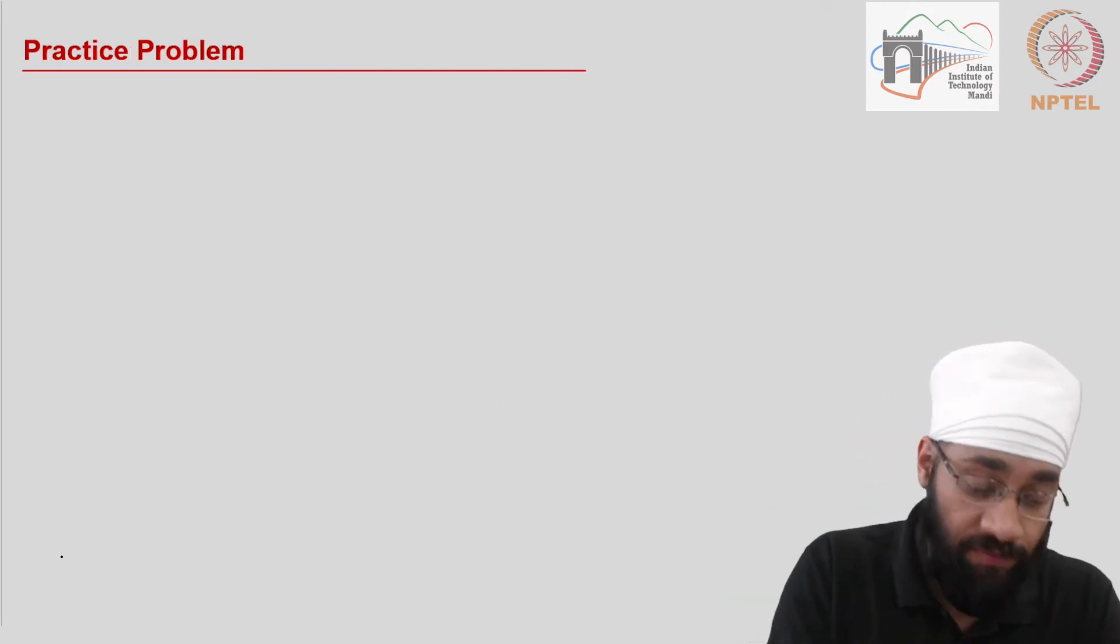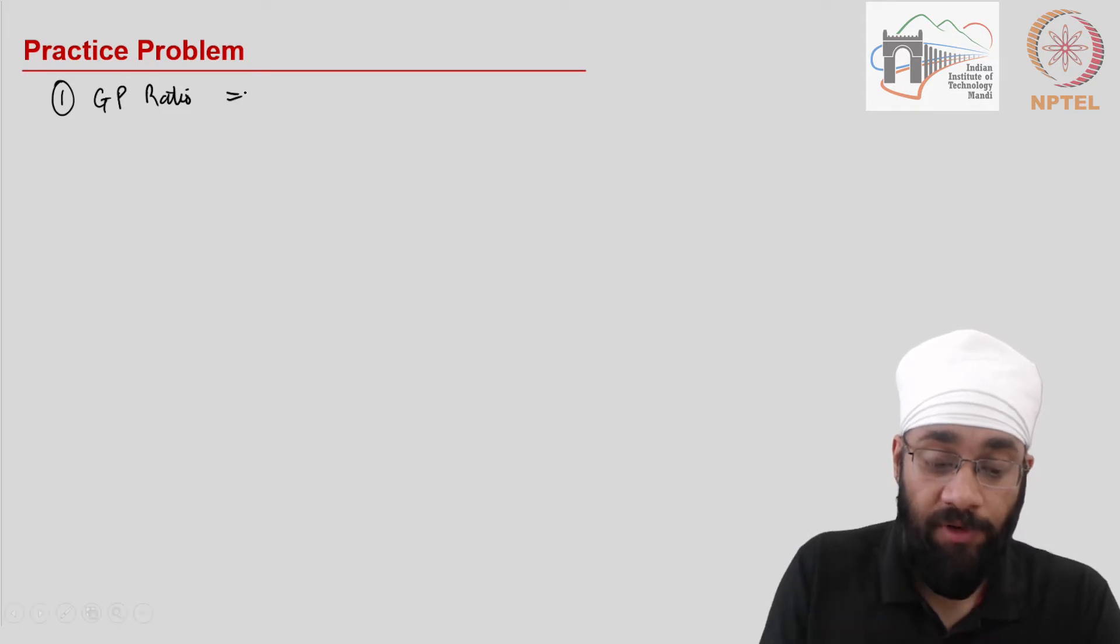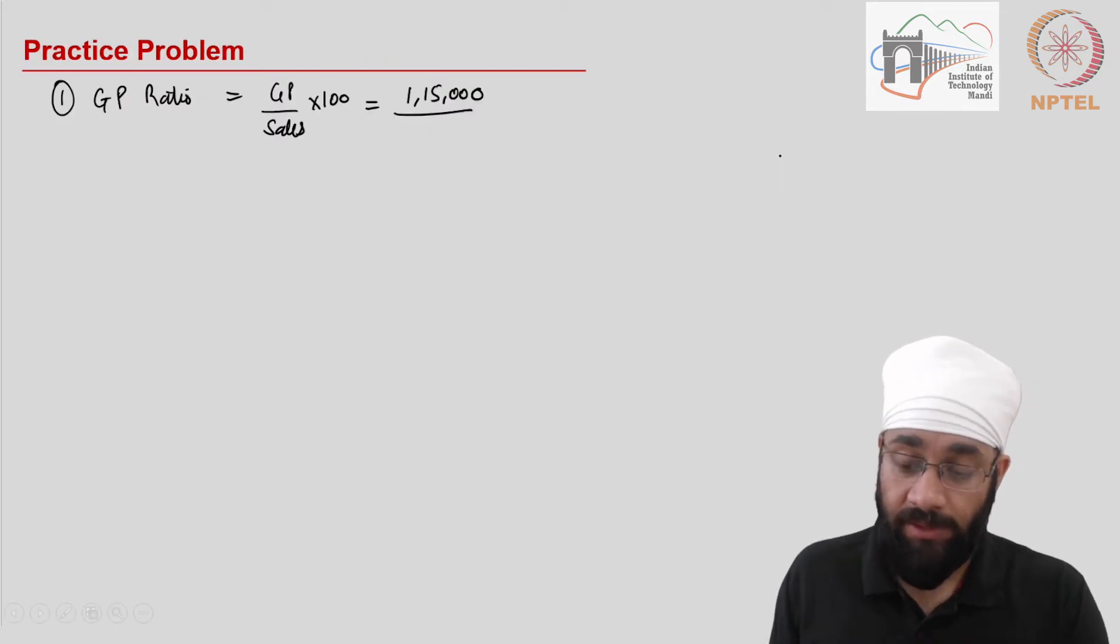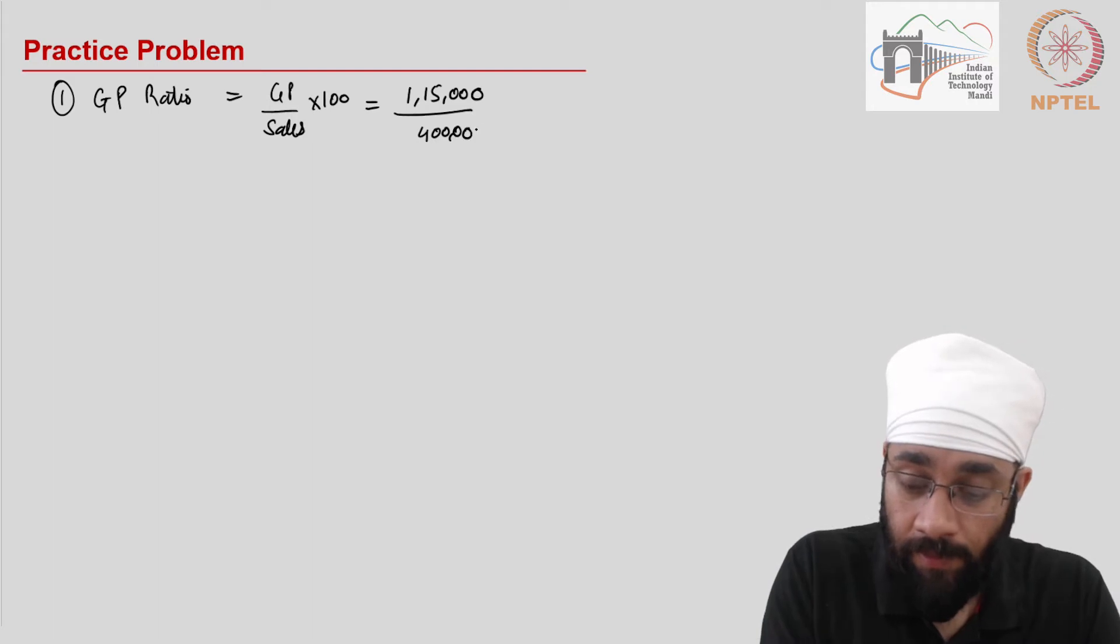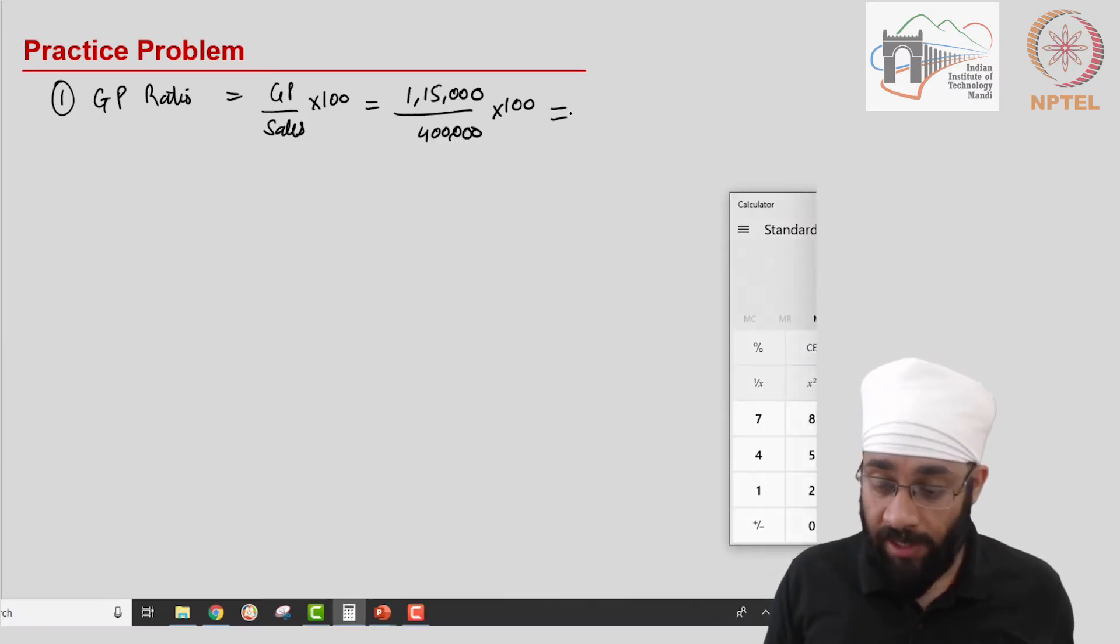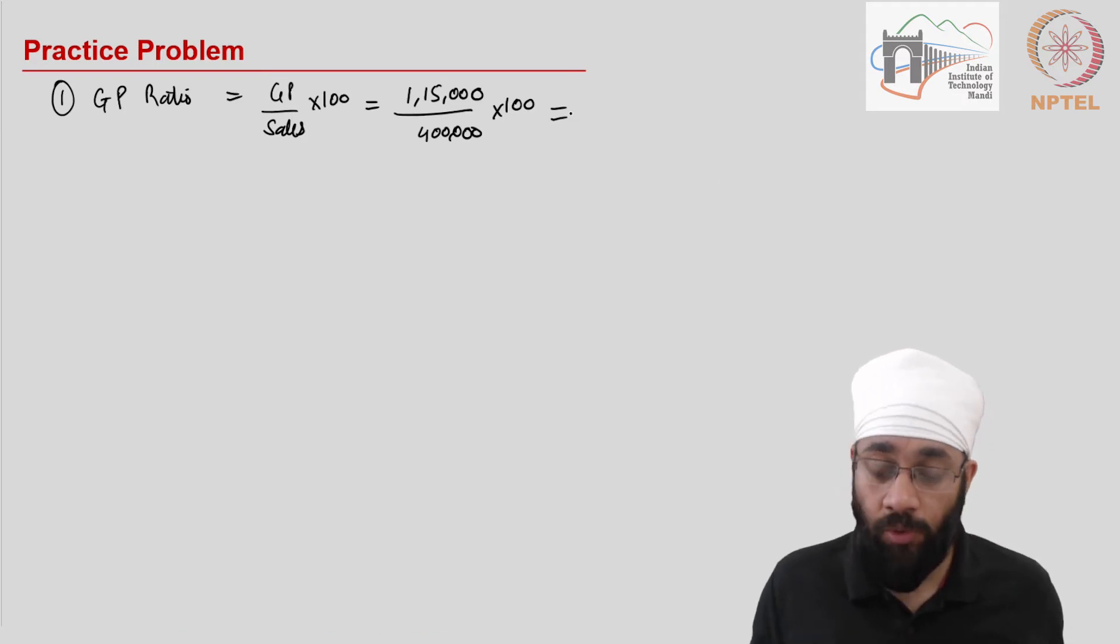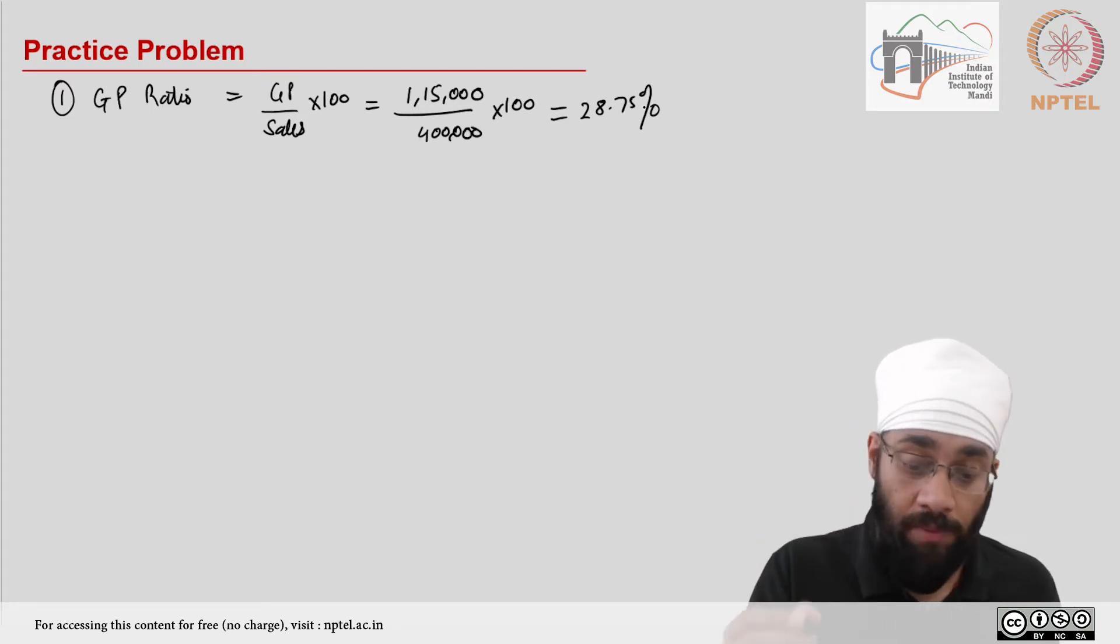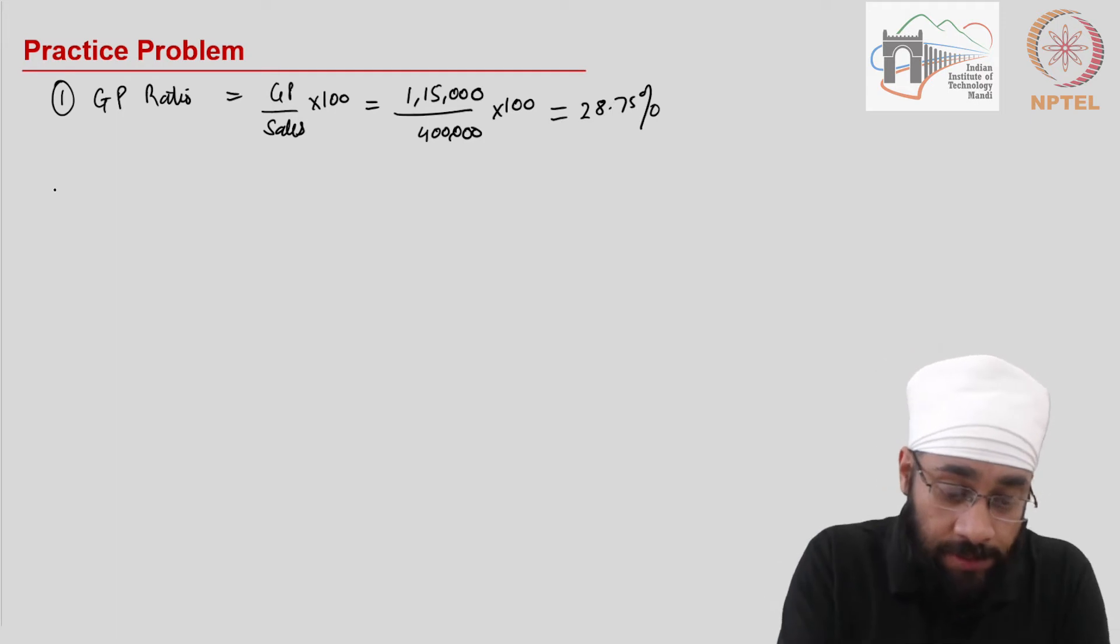The first indicator of the profitability position is the gross profit ratio. The gross profit ratio is simply the gross profit divided by sales multiplied by 100. So gross profit here is 115,000 divided by sales which are 4 lakhs multiplied by 100. I will use my calculator for this: 115 divided by 400 gives me 28.75%. This is the gross margin at which this business is operating. The first ratio has been calculated.